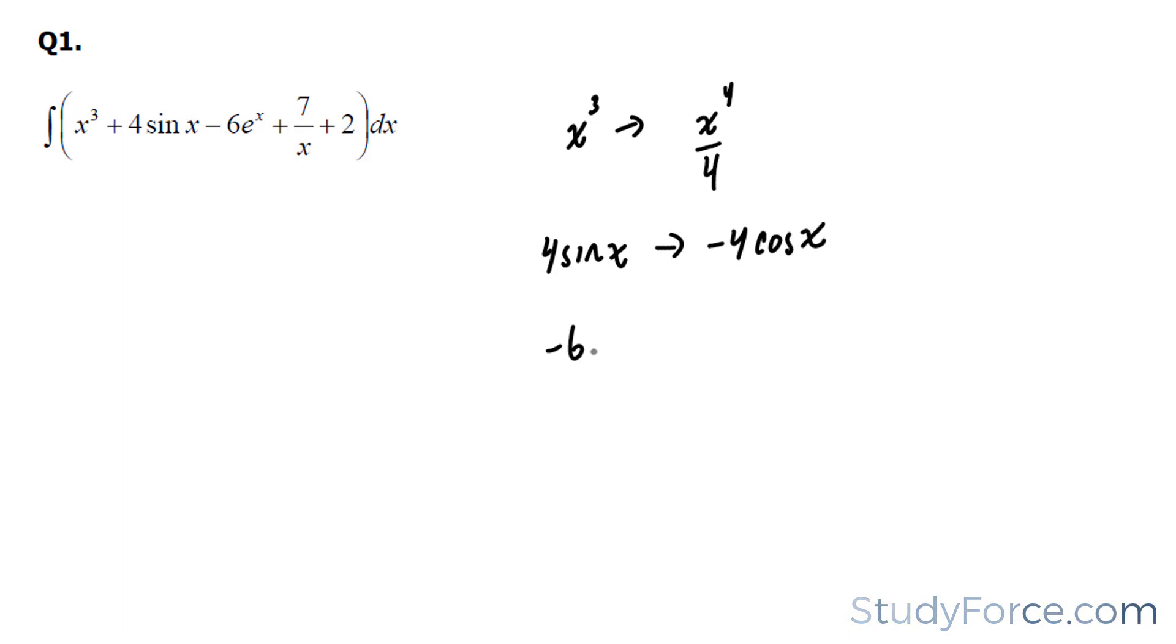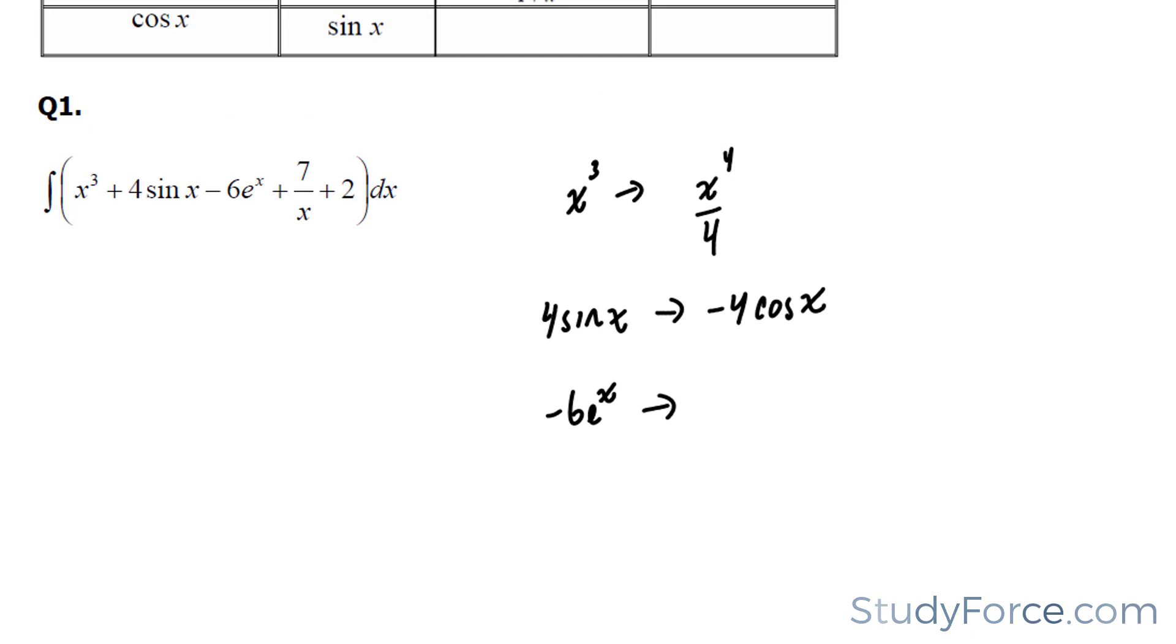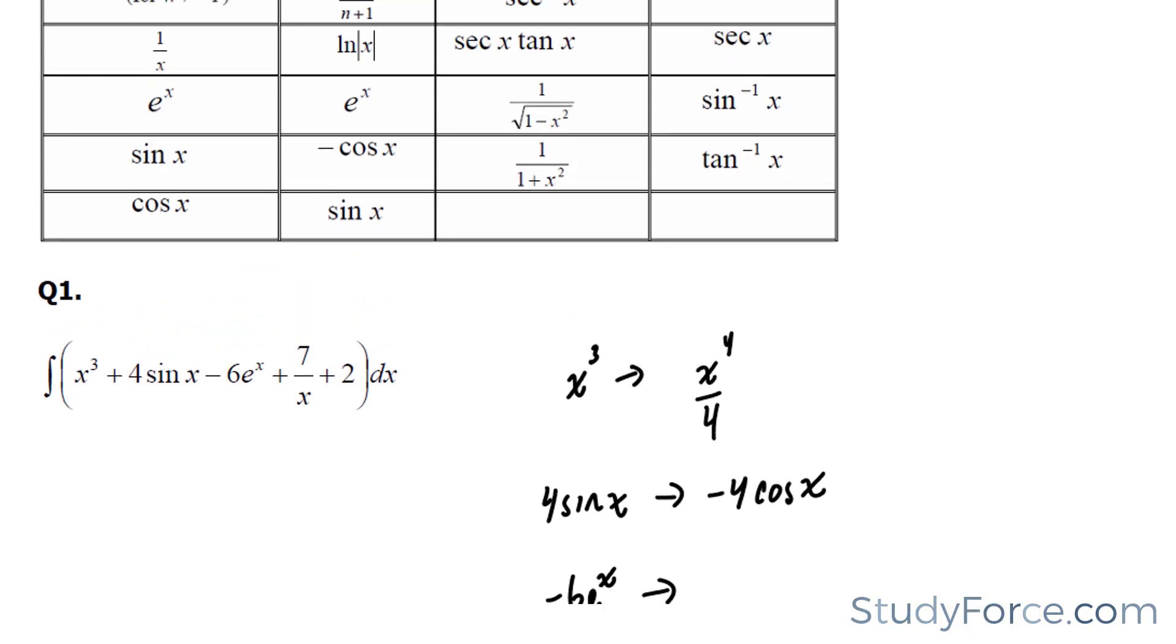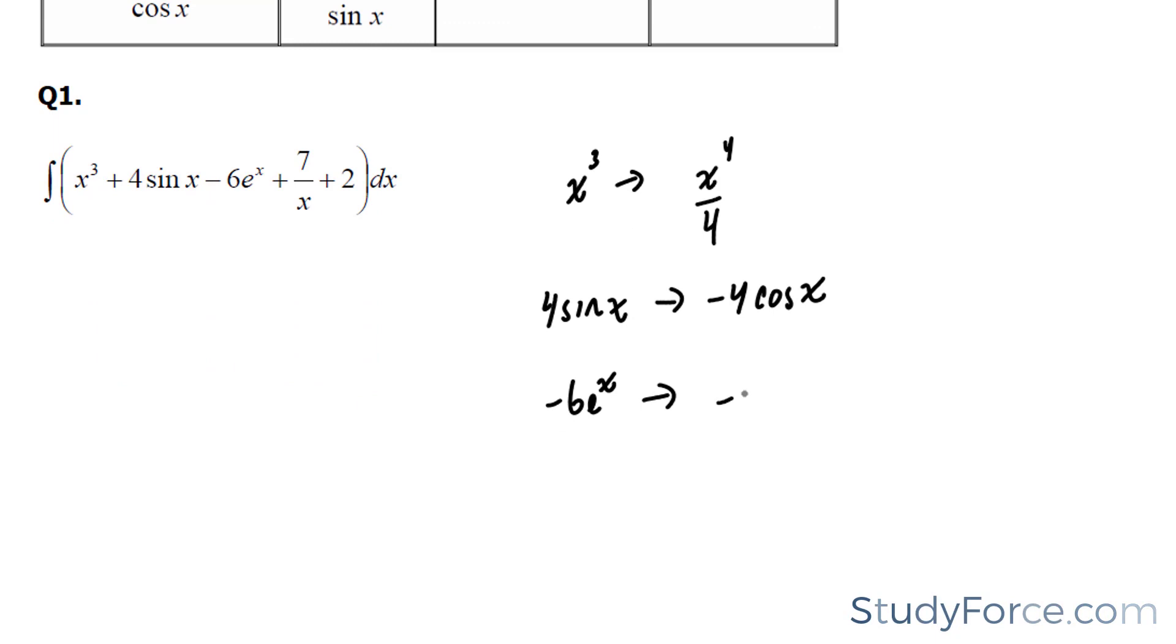Next, we have negative 6 e to the power of x has an antiderivative of e to the power of x. So our answer becomes negative 6 e to the power of x.